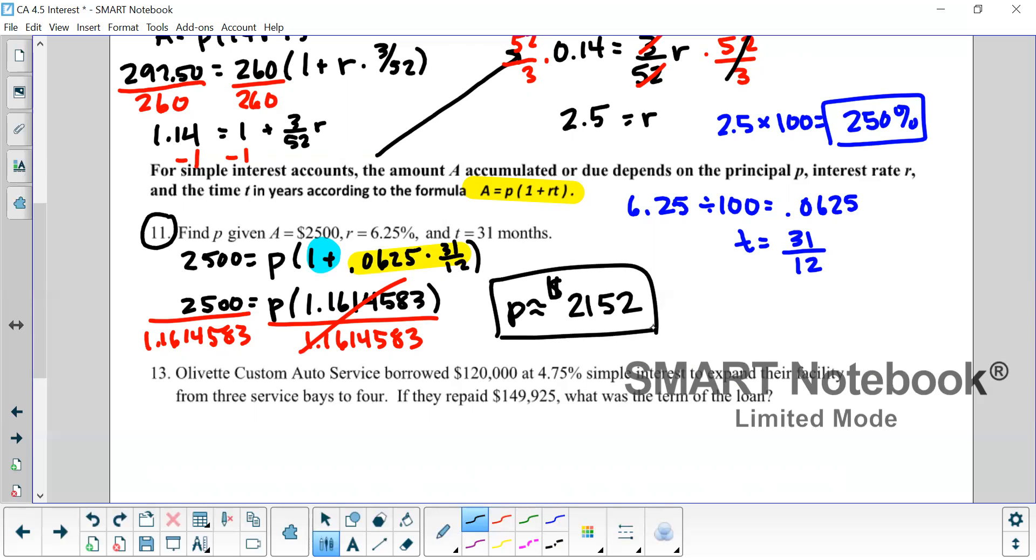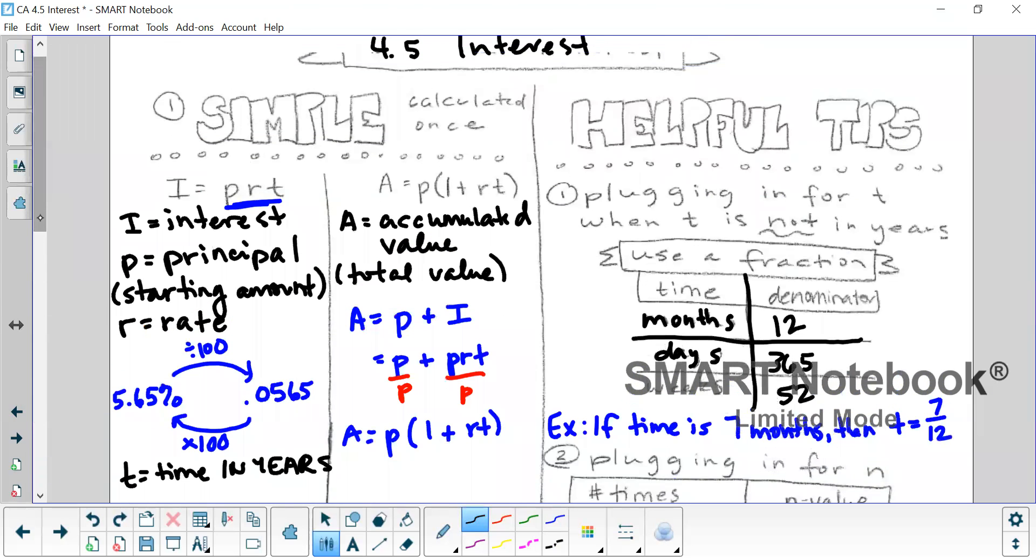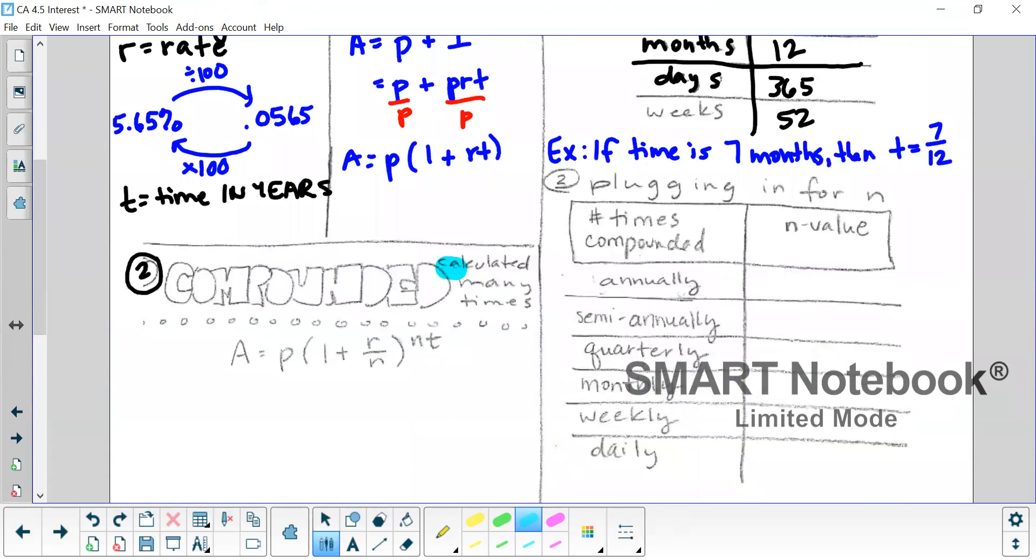So that's two simple interest examples. Now let's go back and talk about the next formula. So right here, when I first started talking about simple interest, notice where it says it's calculated once. Compound interest is it's calculated many times and the interest you earn is added to your original value. And now that becomes your new principal balance. So it's compounded.